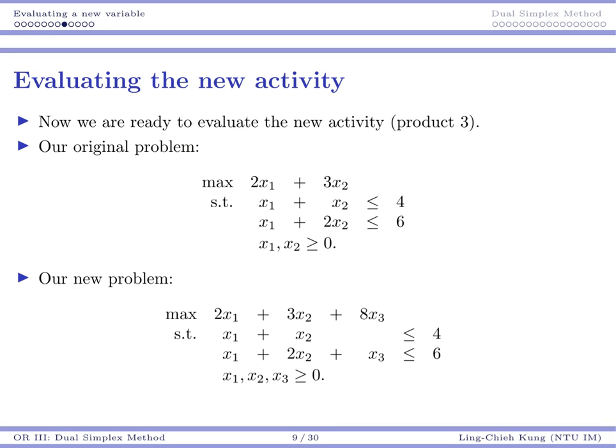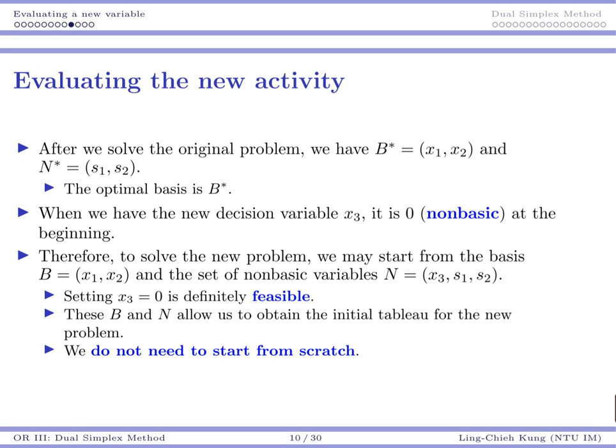So let's go back to our original problem. Original problem is here. New problem is here. We have a new column for x3. And now let's do this by considering the reduced cost. We want to calculate the reduced cost for x3. Somehow, that requires us to recall our memory about our famous formula, CB transpose AB inverse AN minus CN.